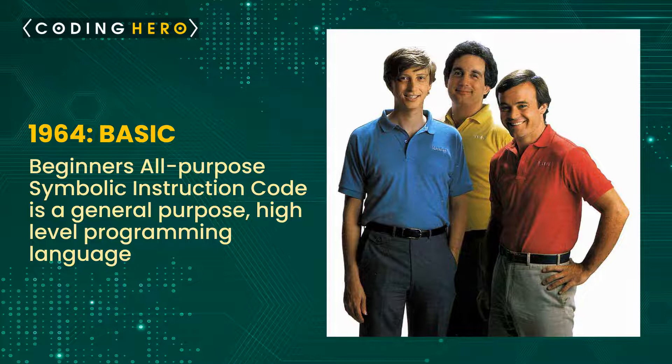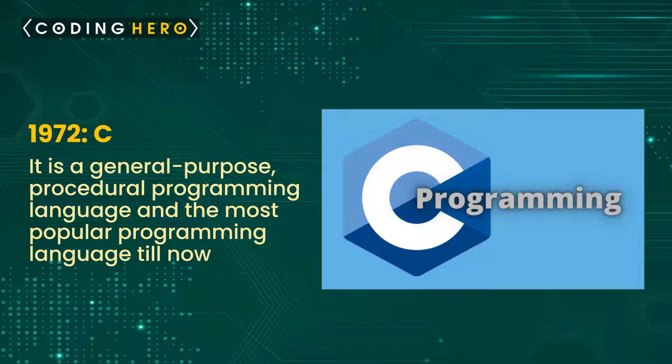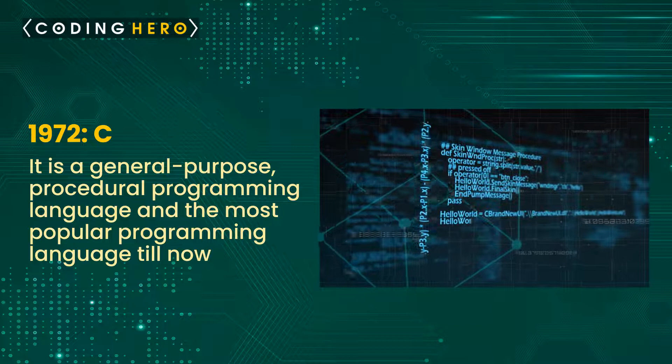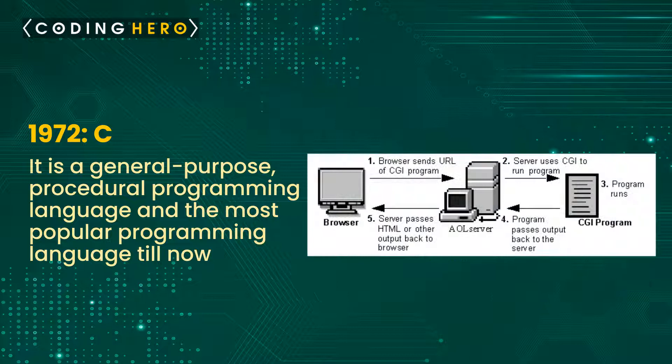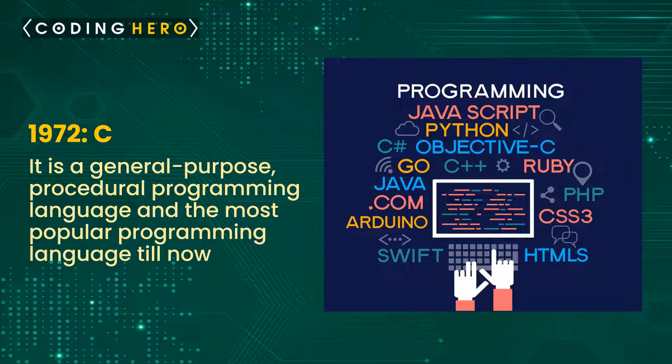In 1972, the C language arrived. It is a general-purpose procedural programming language and the most popular programming language until now. All the code previously written in assembly language — like operating systems, kernel, and many other applications — was replaced by C. It can be used in implementing an operating system, embedded systems, and also on websites using Common Gateway Interface (CGI). C is the mother of almost all higher-level programming languages of today, like C++, D, Go, Java, JavaScript, Limbo, LPC, Perl, PHP, Python, and Unix C shell.